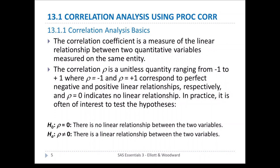Let's look at Section 13.1, Correlation Analysis, using PROC CORR. This is Correlation Analysis Basics. The correlation coefficient is a measure of the linear relationship between two quantitative variables measured on the same entity. The correlation, rho, is a unitless quantity ranging from negative 1 to 1, where rho equal negative 1 and rho equal positive 1 correspond to perfect negative and positive linear relationships, respectively. And rho equals 0 indicates no linear relationship.